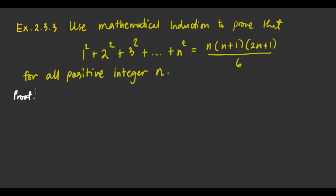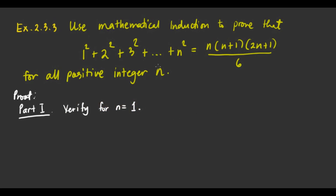Okay, the proof has two parts. For Part 1, we verify for n equals 1. Since we're dealing with positive integers, the starting point is n equals 1. So let's substitute — if we start with 1, it's 1 squared. So 1 squared is equal to 1.